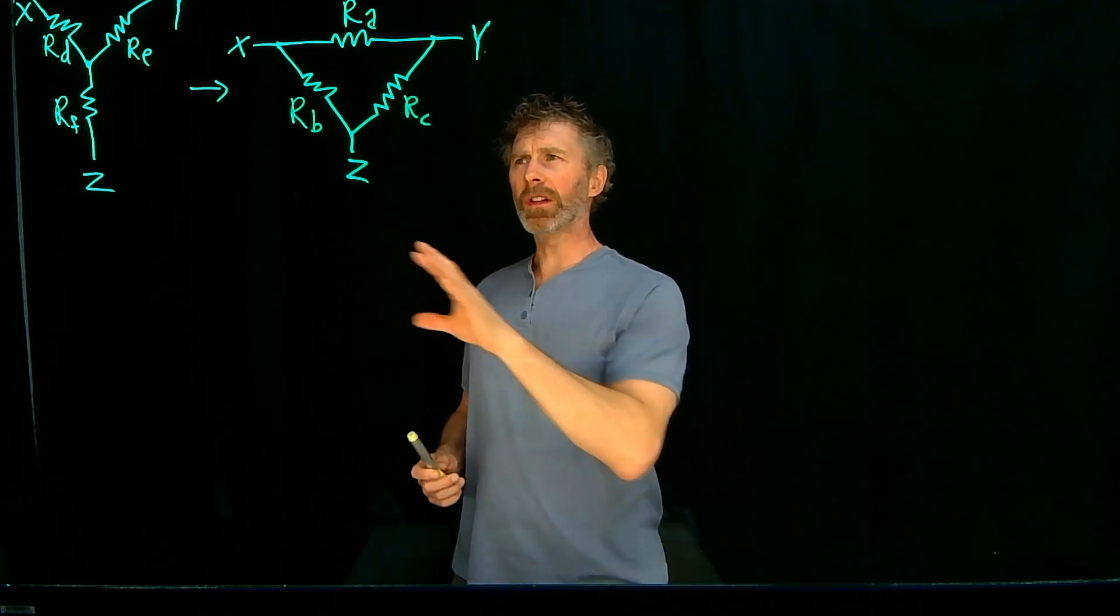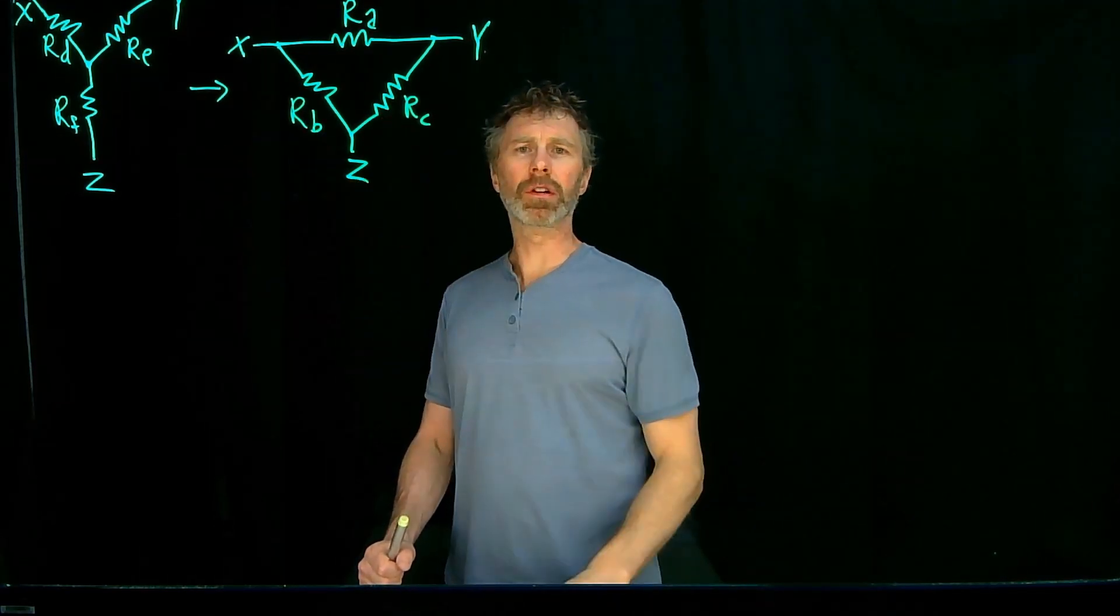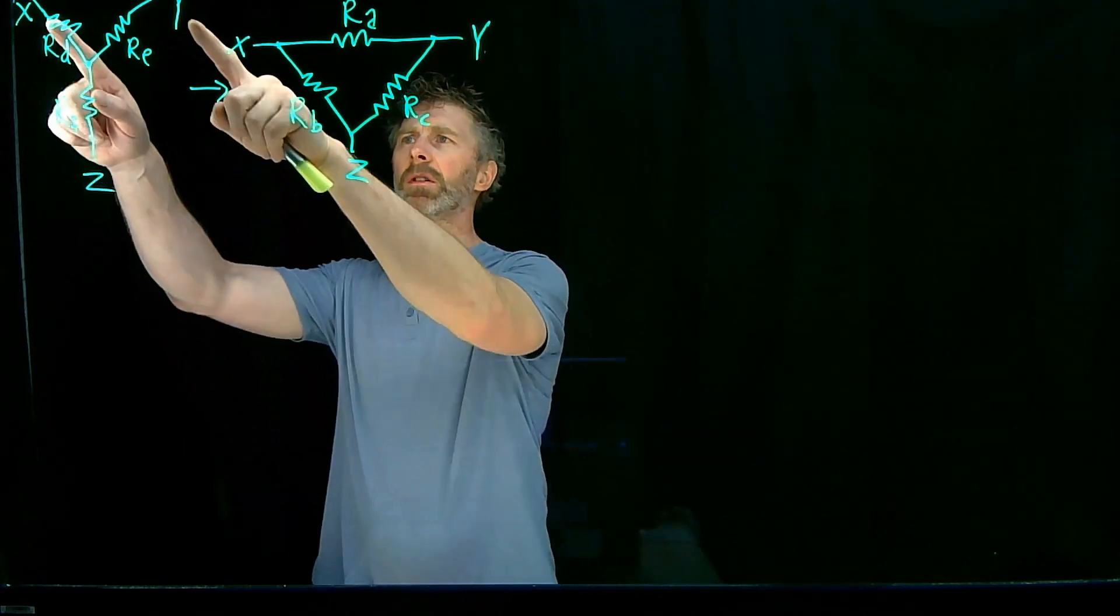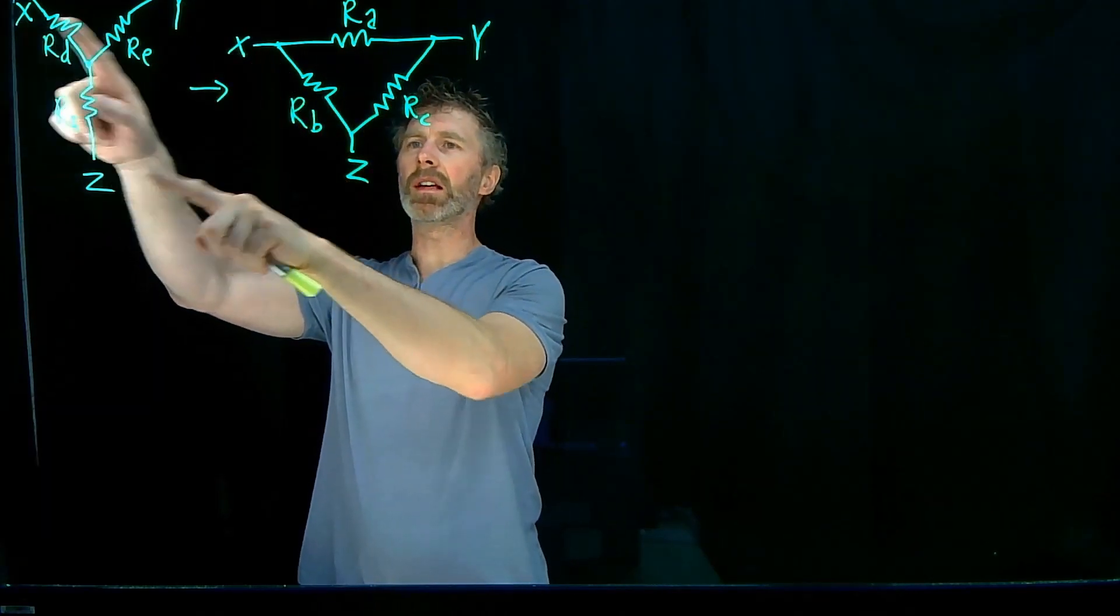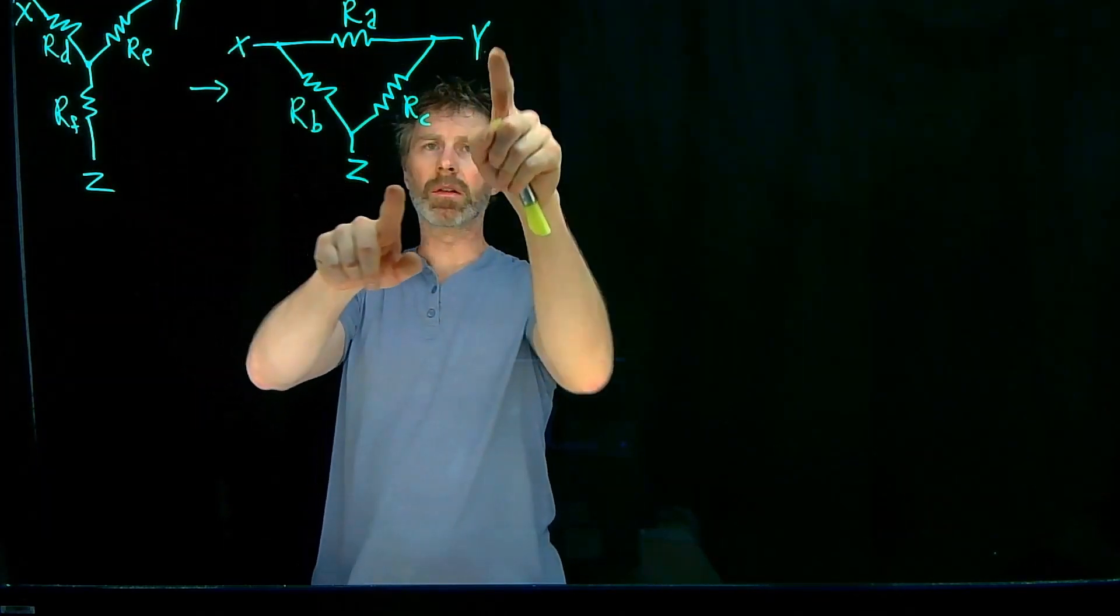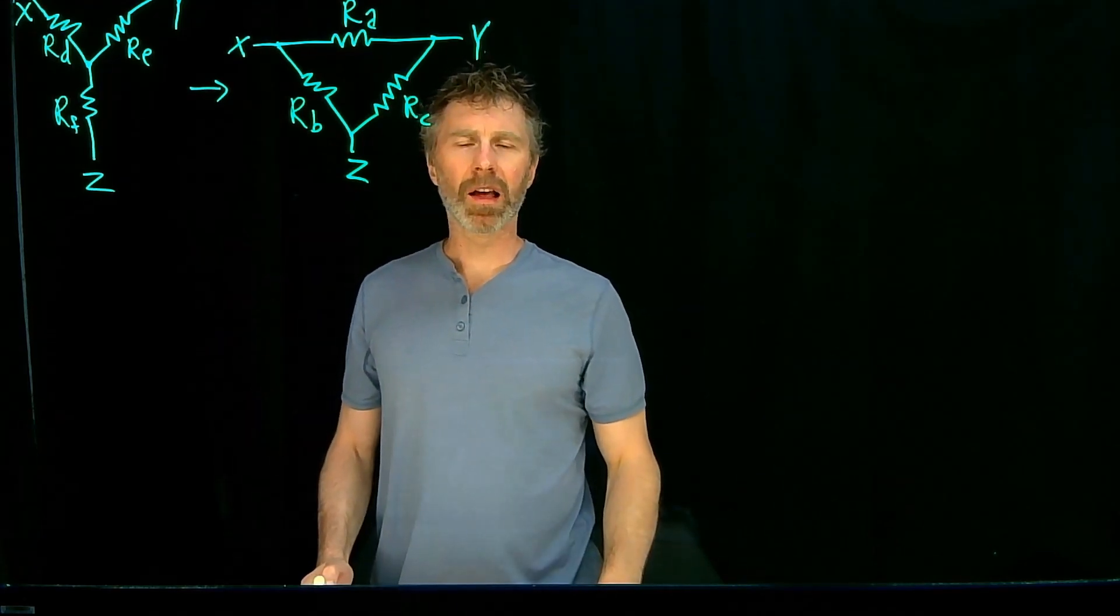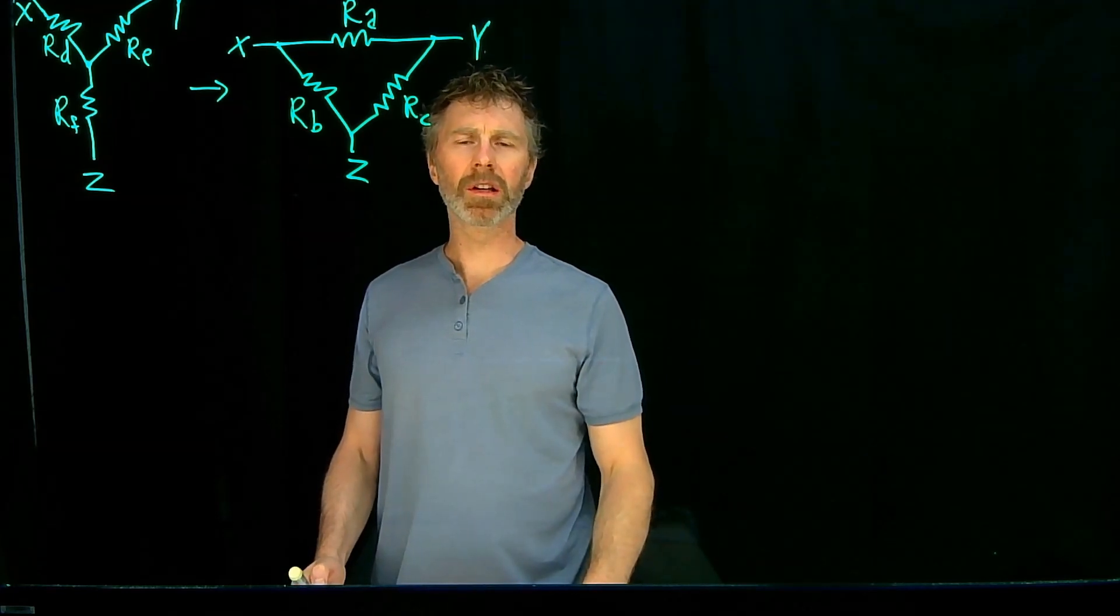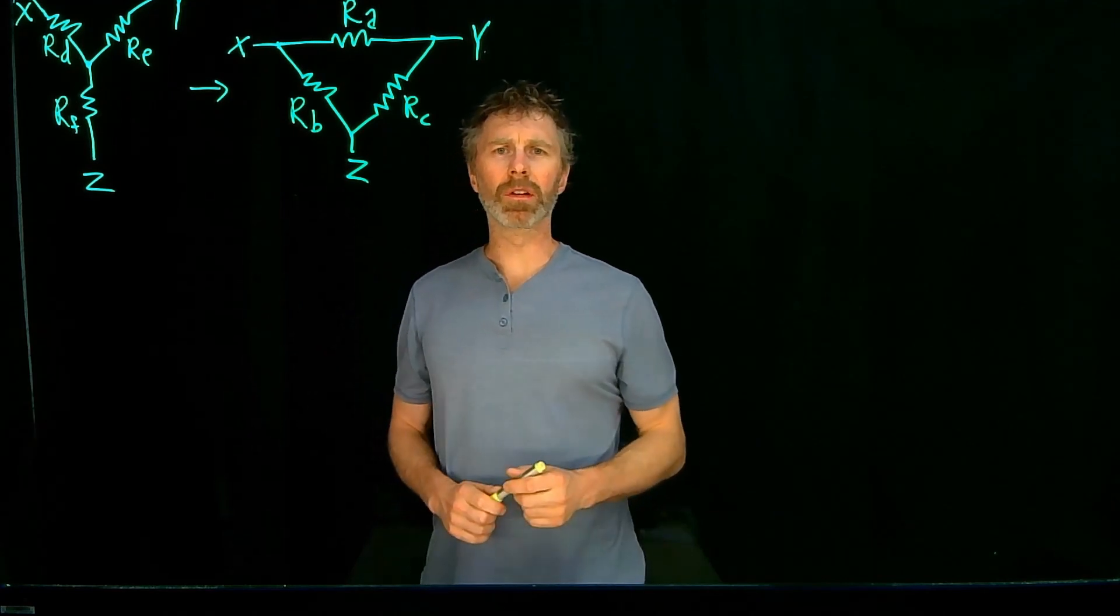And let's start off with just looking at how these two circuits can be equivalent. And what we're going to do is look at the resistances between X and Y in this circuit, X and Y in this circuit, X and Z, X and Z, and Y and Z, and Y and Z. And just in the two different circuits and come up with an equation for the resistances for each one of those circuits. And then if we set those equations equal to each other, then we're going to have equivalent circuits.